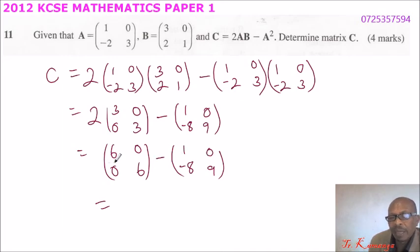Now we subtract corresponding elements of the matrix: 6 minus 1 is 5, 0 minus 0 is 0, 0 minus -8 becomes positive 8 because minus and minus changes to positive, 6 minus 9 gives -3. So that is the matrix C as a result of this process.